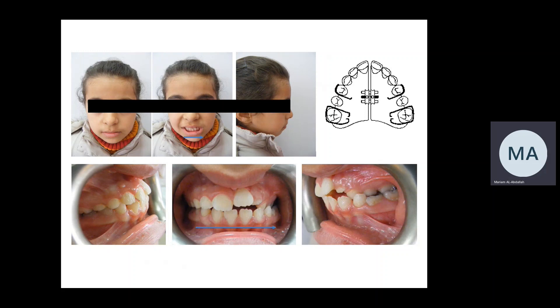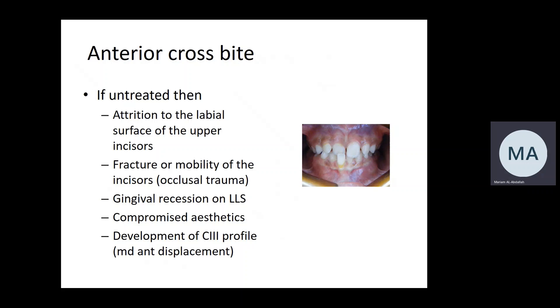With mandibular displacement, we have to go for symmetrical expansion of the maxilla using a midline expansion screw. Other options include a quad helix or other appliances, depending on how much expansion is needed, the type of tooth movement, the age of the patient, the skeletal problem, whether the maxilla is narrow or the teeth are tapered — all these factors affect the treatment choice.